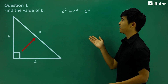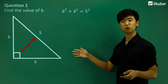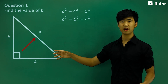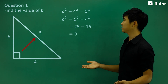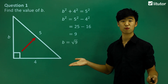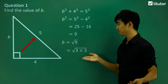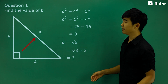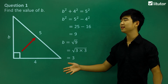We want to isolate b, so let's move the 4 squared onto the other side of the equal sign. Now let's calculate: we have 25 take away 16, which gives us 9. So b squared equals 9. Now b will be the square root of 9, which we can write as 3 squared, or 3 times 3. We cancel out the square root symbol and we're left with b equals 3. We just applied the Pythagoras theorem to find the unknown side.